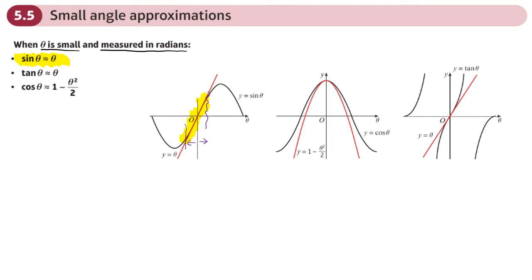We're going to jump to the tan graph now. You can see the graph of tan theta and the graph of theta — they're pretty much the same in this band here. As you go further out, the graphs diverge. So we've got another small angle approximation: tan theta can be approximated to theta, when theta is small and measured in radians.